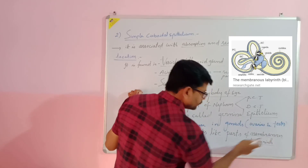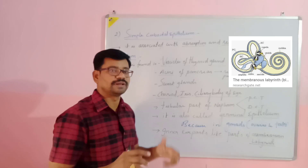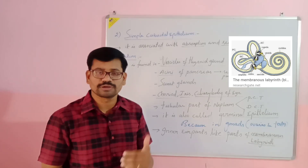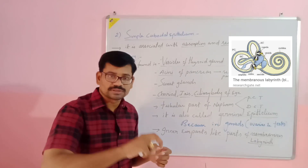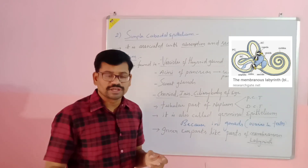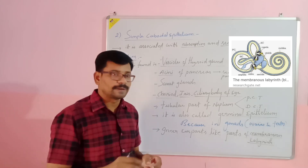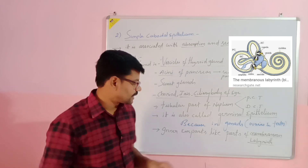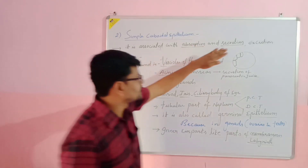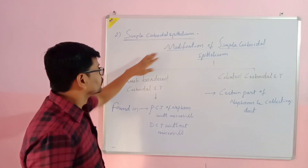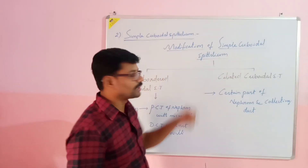The last location is parts of the membranous labyrinth of the inner ear. The inner ear has two labyrinths: the bony labyrinth, which forms the channels, and the membranous labyrinth, which lines those channels. All these locations are associated with the functions of absorption, secretion, and excretion.